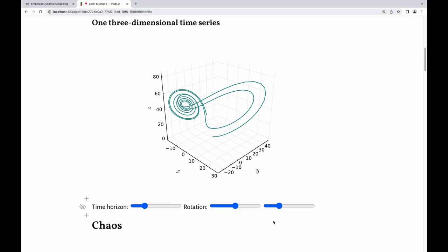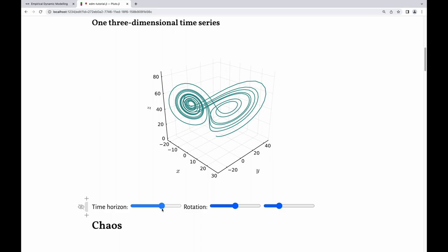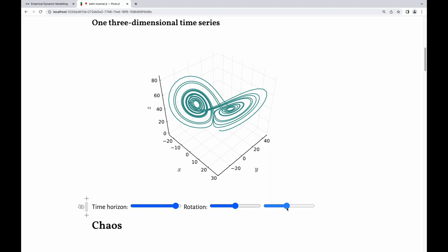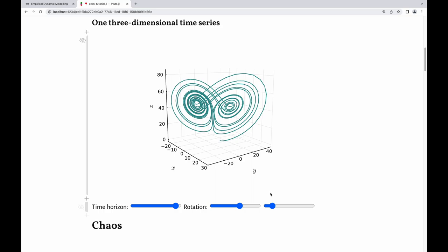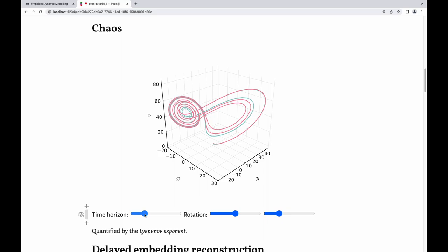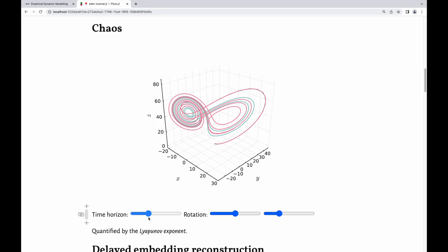Now, instead of three different time series, pretend that we just view it in three-dimensional space, a point moving around in phase space. That's the way we'll view it. Those equations, of course, I chose the Lorenz attractor to make it nice and pretty. And that's a chaotic system, so starting at slightly different locations, you end up at totally different points.